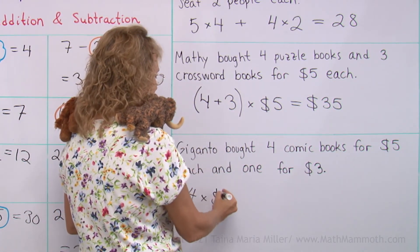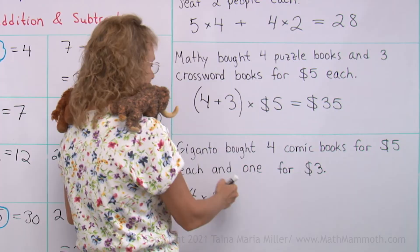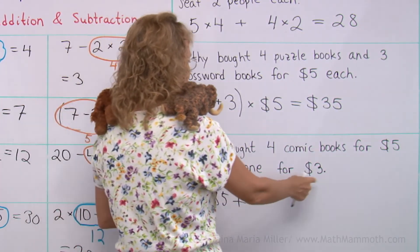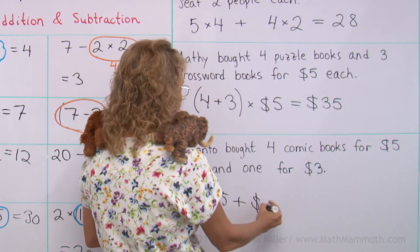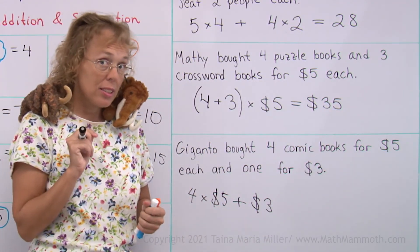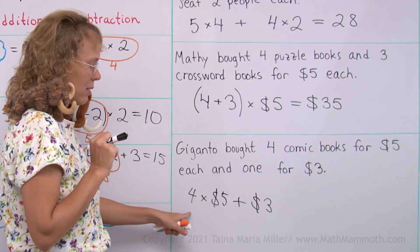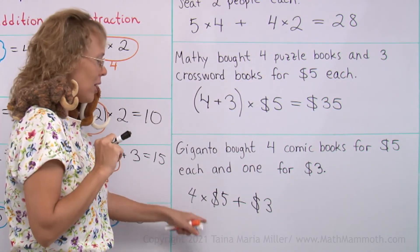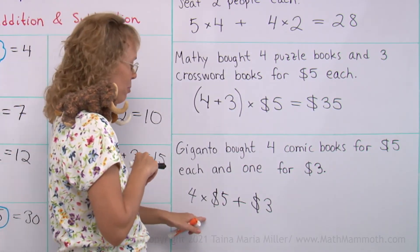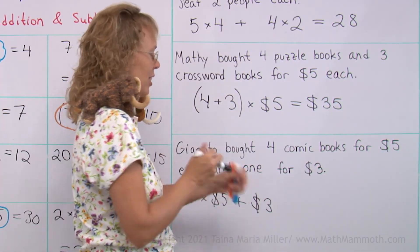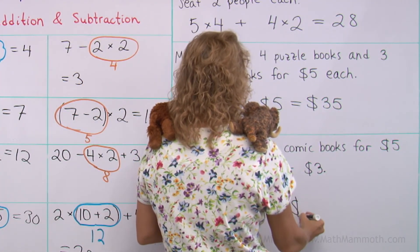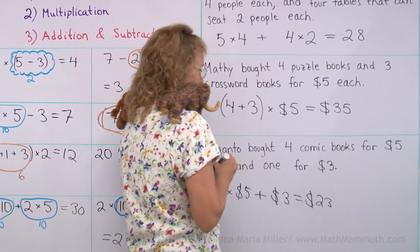Four times $5. 'And' means we will add one for $3, so we will just add $3. Do I need any parentheses? No, because the multiplication is done first according to the order of operations. It's 20 and 3, so the cost is $23 for buying all those books.